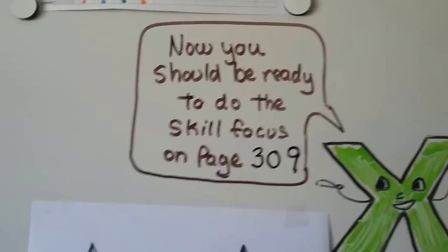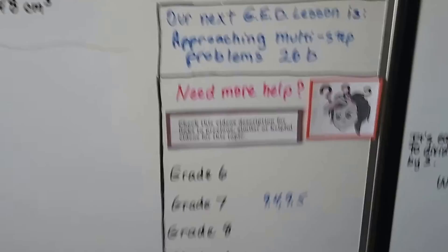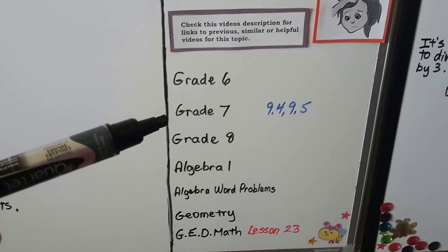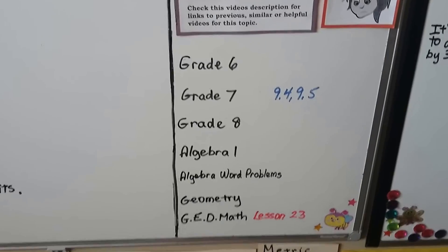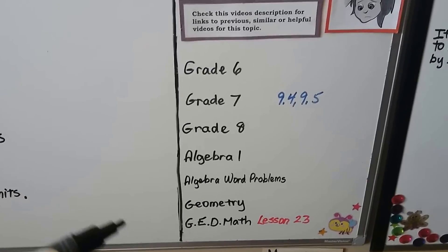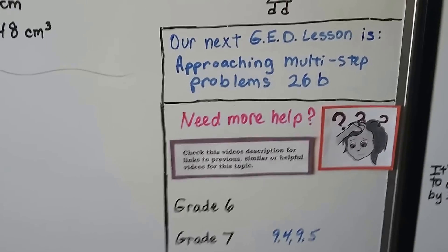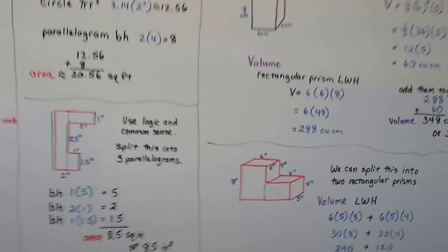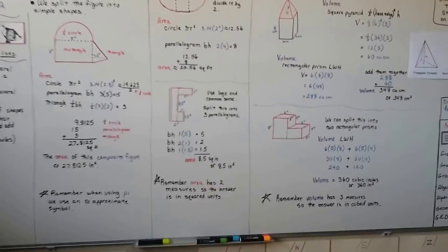You should be ready to do the skill focus on page 309, and there's going to be links to these two grade 7 math videos that talk about area and volume of composite figures, and I'll have links to lesson 23 about area and volume for the shapes that are not composite. Our next video is going to be about approaching multi-step problems, lesson 26b. That talks about, if you have a swimming pool and you want to put a concrete sidewalk around it, what's the square footage of the concrete going around the pool? Stuff like that.